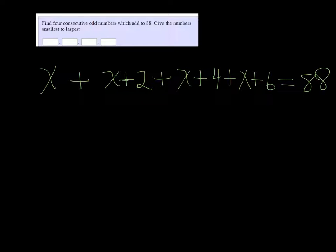So I have x plus x plus x plus x. I have 4x plus 2, 4, and 6 would be 12, equals 88.